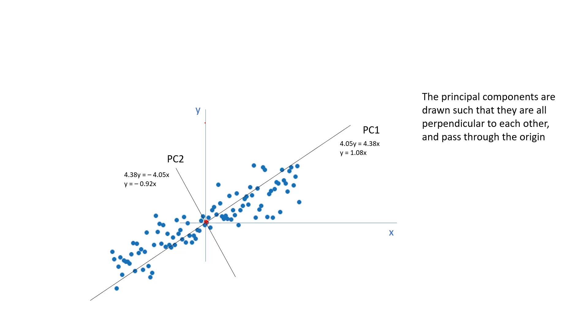The PC2, this will be perpendicular to PC1 and it will also pass through the origin. For PC2, in this case, it does not have any other option but to be this particular line.